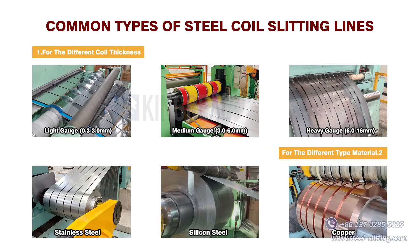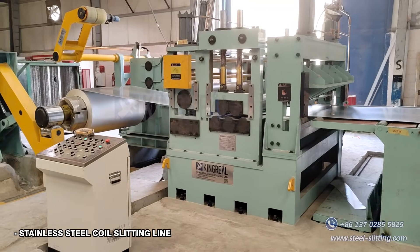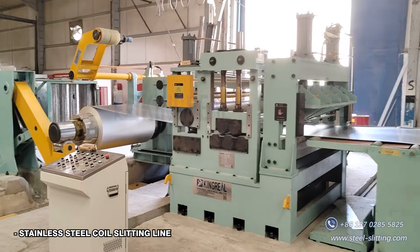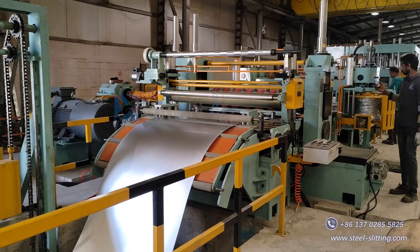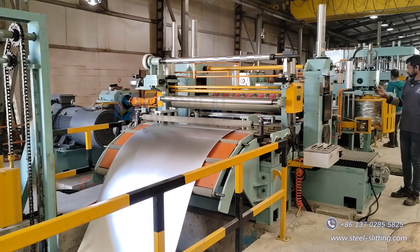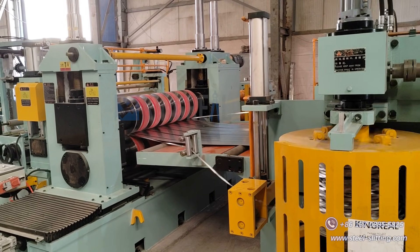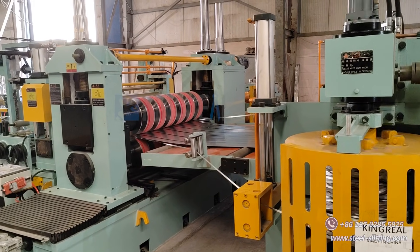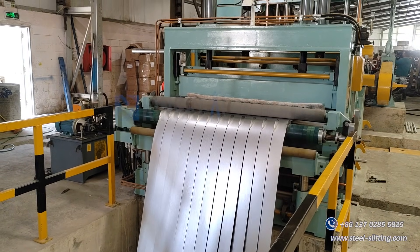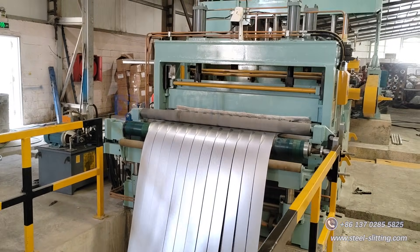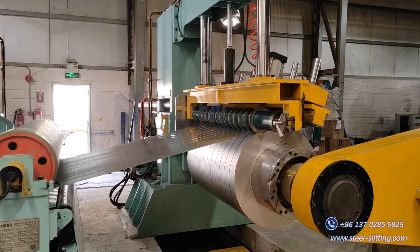Stainless steel slitting machine is a kind of equipment specialized in cutting stainless steel coil material, such as stainless steel plate, strip, and coil, into small width strips. Due to the special properties of stainless steel materials, such as higher strength, hardness, and easy surface damage, stainless steel slitting machines usually use high hardness, high wear-resistant blades, such as high-speed steel and carbide, and a strong drive system.